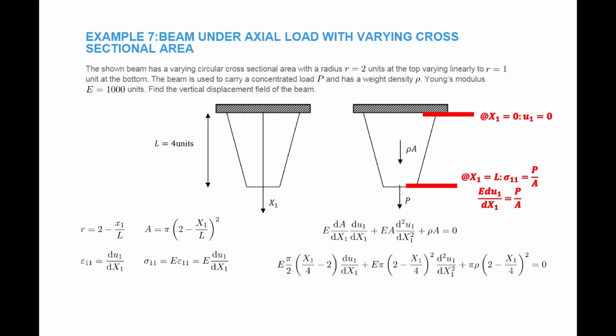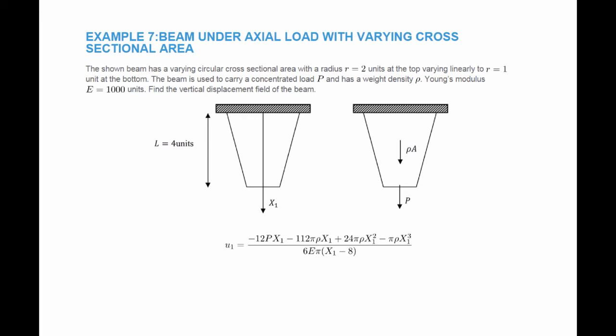This is not a simple differential equation to solve by hand, so we use the software Mathematica to solve it. Inputting the differential equation, we reach the displacement: u1 equals negative 12p times x1 minus 112 pi rho times x1 and so on. This gives the displacement at every point along x1. Inputting x1 equals zero yields a displacement of zero, confirming it satisfies the boundary conditions.